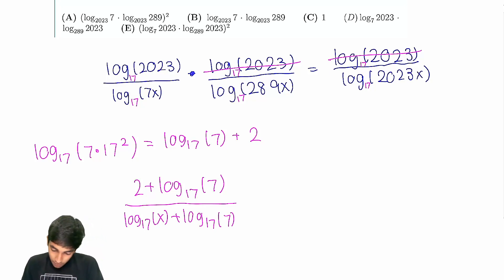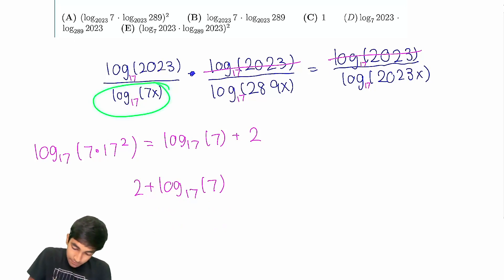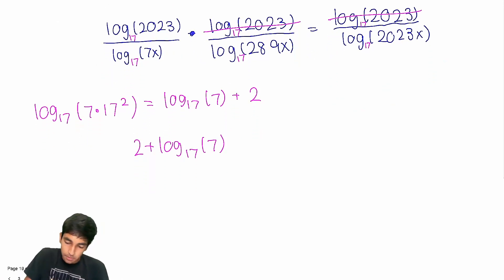You know what, I'm actually going to write this in a little bit of a different way, this equation. What I'm going to do is write log₁₇(7x) and log₁₇(289x), their product, divided by this equals log₁₇(2023). It's the same thing. I think it's just going to be a little bit easier to work in this way.